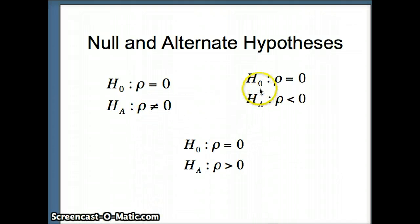That would be a two-tail test. H0 rho equals 0 versus rho is less than 0. A one-tailed test to the left.